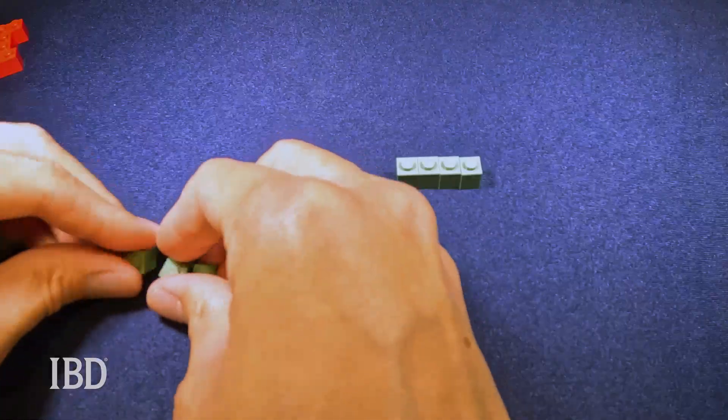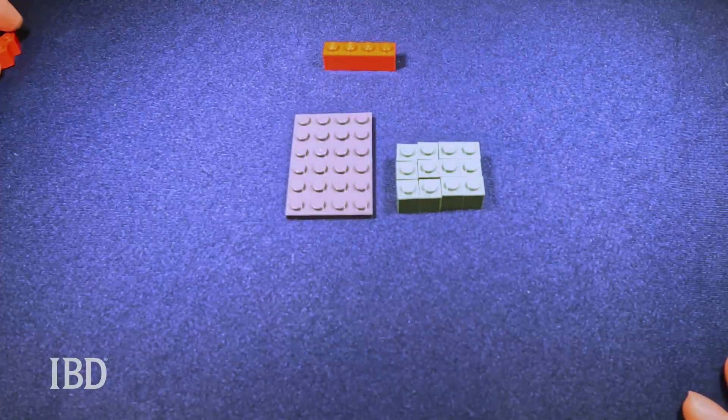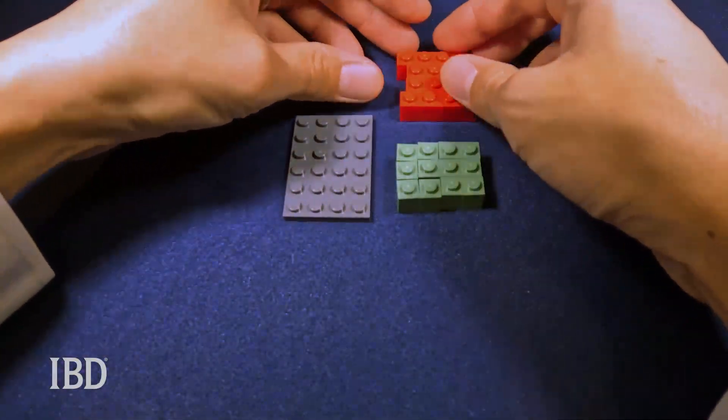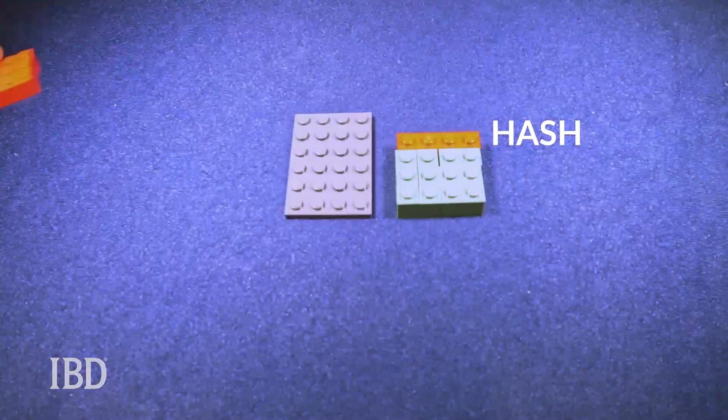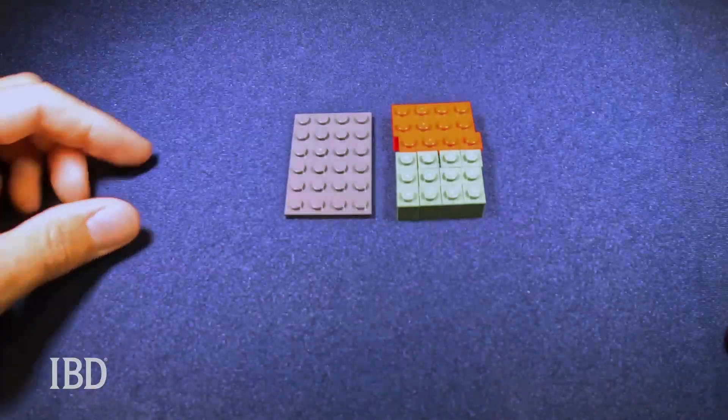Each ledger is added to a block of transactions from other users, which are then validated by a miner. A miner collects these transactions and encodes them with a random number using cryptography, creating a unique code called a hash. Miners keep adjusting this random number until the resulting hash matches or beats the crypto network's target example.